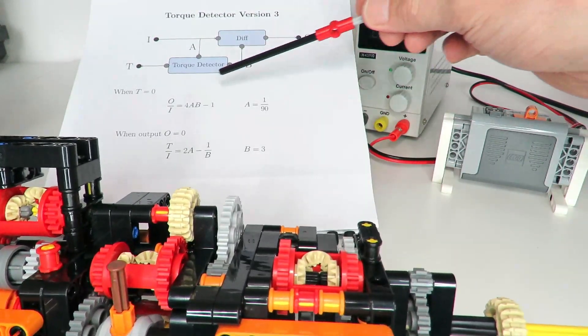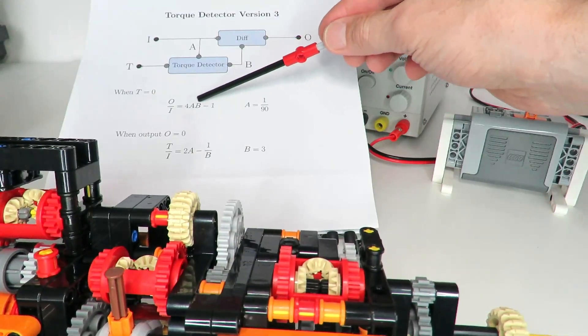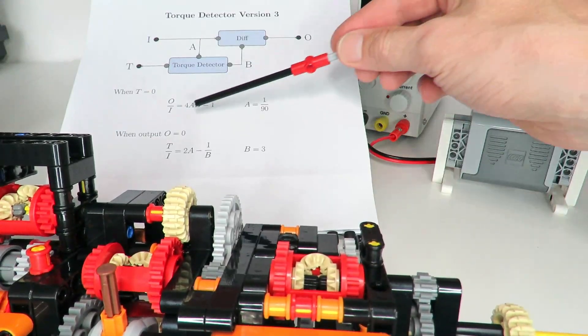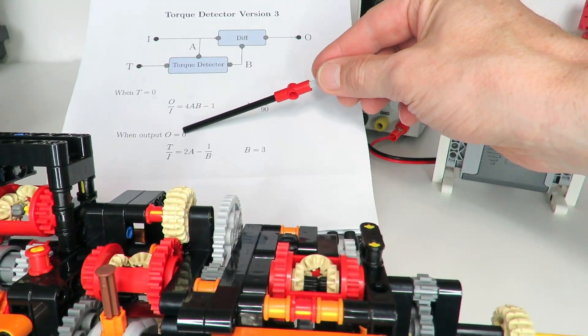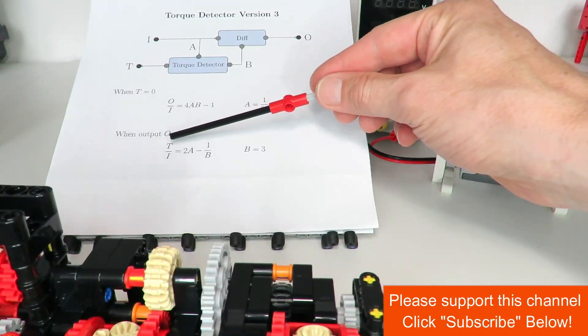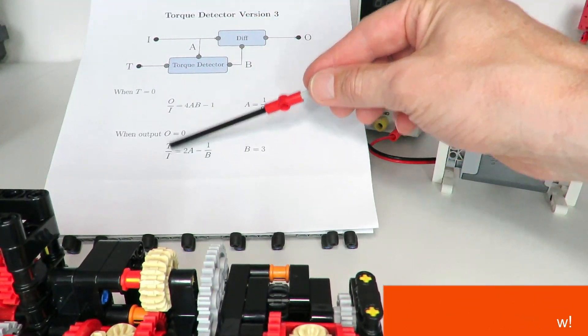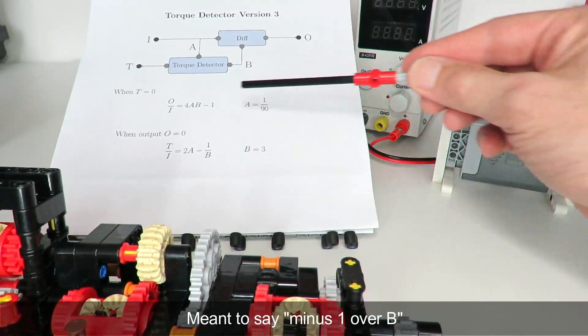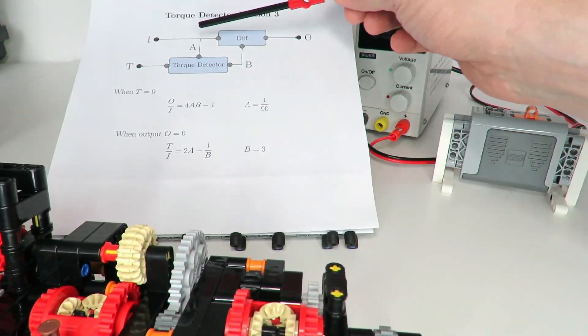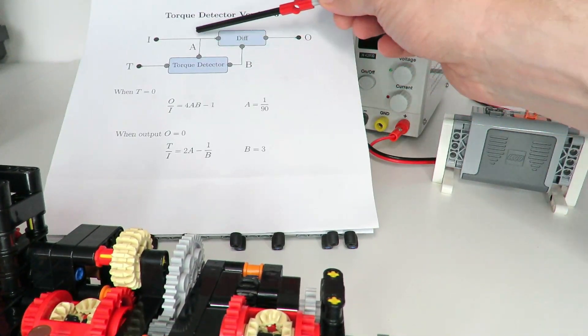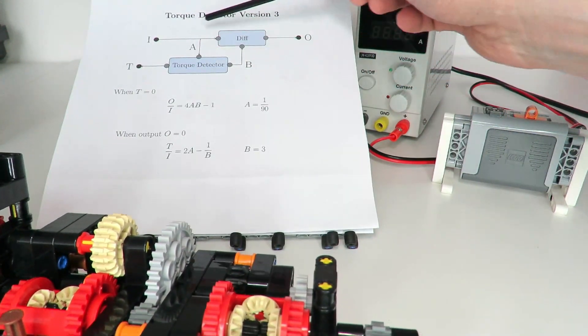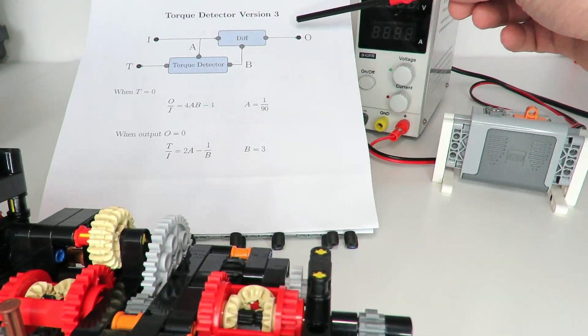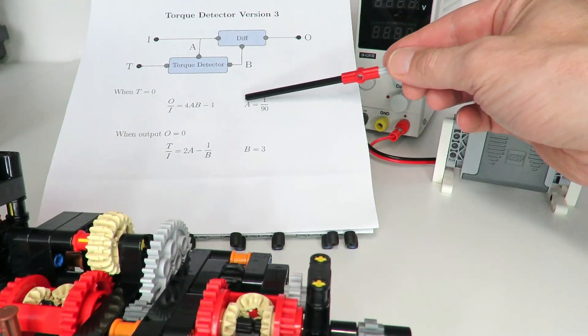If you go through the equations, what happens is when the torque detection is not rotating, then the ratio between input and output is simply given by this equation here - it's 4AB minus 1. However, when there's a high load on the output, what that means is the output will almost not be rotating, and then the ratio between the output of the torque detector T over the input is 2A minus 1 over B. The trick is to choose an A and B that gives us good values, and what we really want is that this path here has got a low rotation so there's minimal power losses from that torque detector. You want most of the speed to be going through this path so that you minimize the power losses.